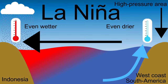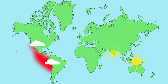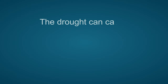El Niño affects not only the Pacific around the equator but many more areas. The warm sea in the eastern Pacific Ocean creates heat and water vapor in the atmosphere, which can increase rainfall and flooding in many places in the world such as Peru and Ecuador. Also in the southern part of the United States such as California it usually rains more after an El Niño. At the same time it is much drier in other places such as Indonesia, India, southern Africa, and Australia, where drought can cause forest fires or crop failures.